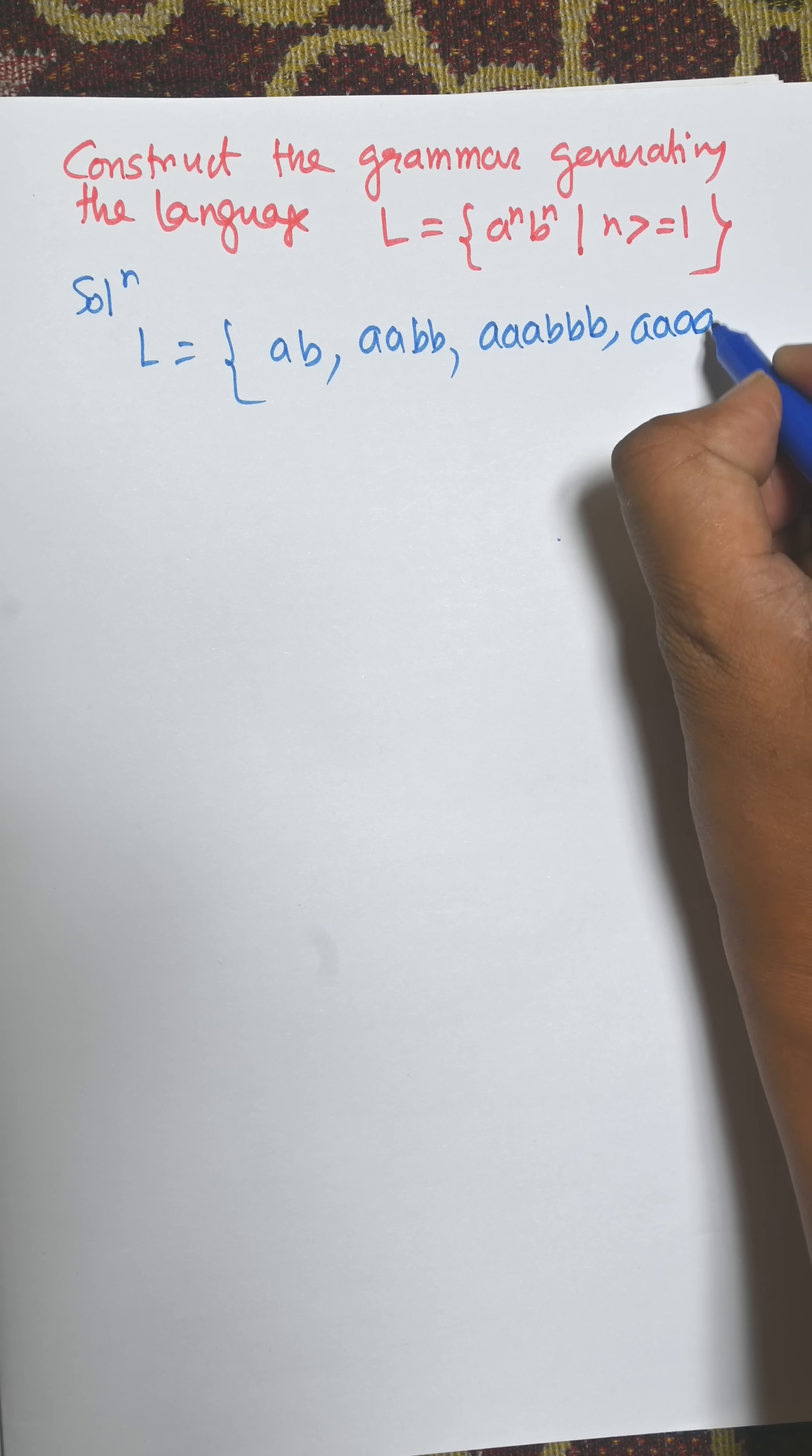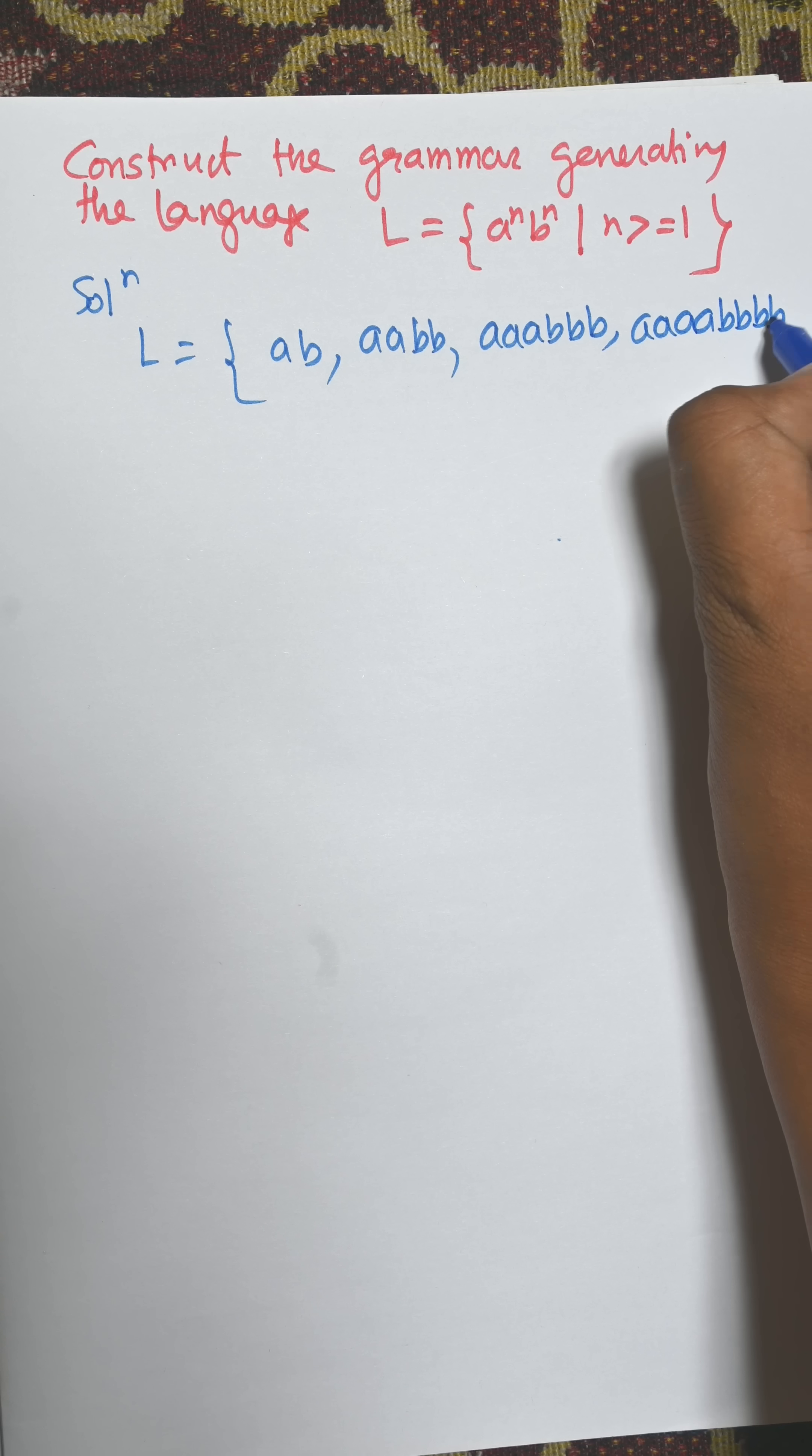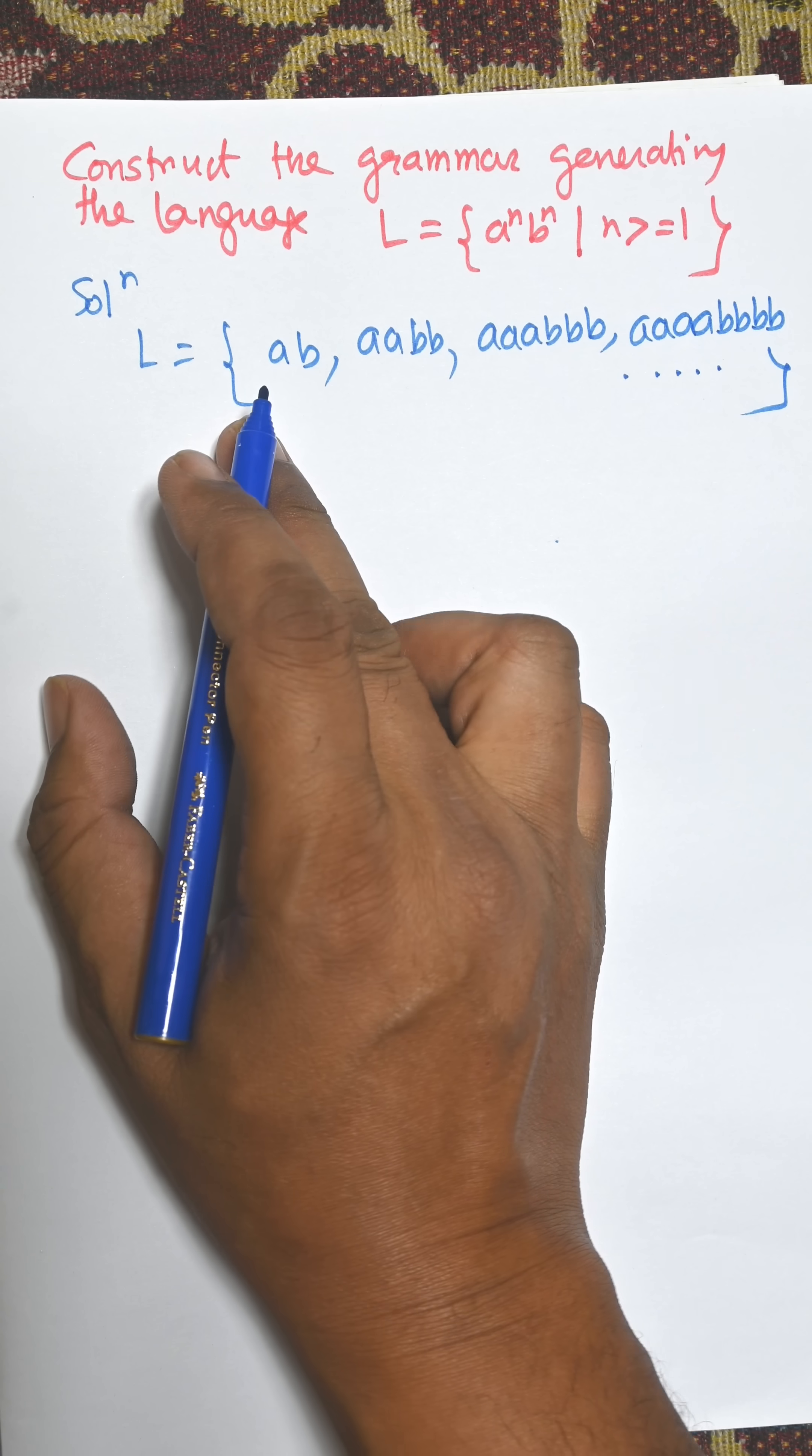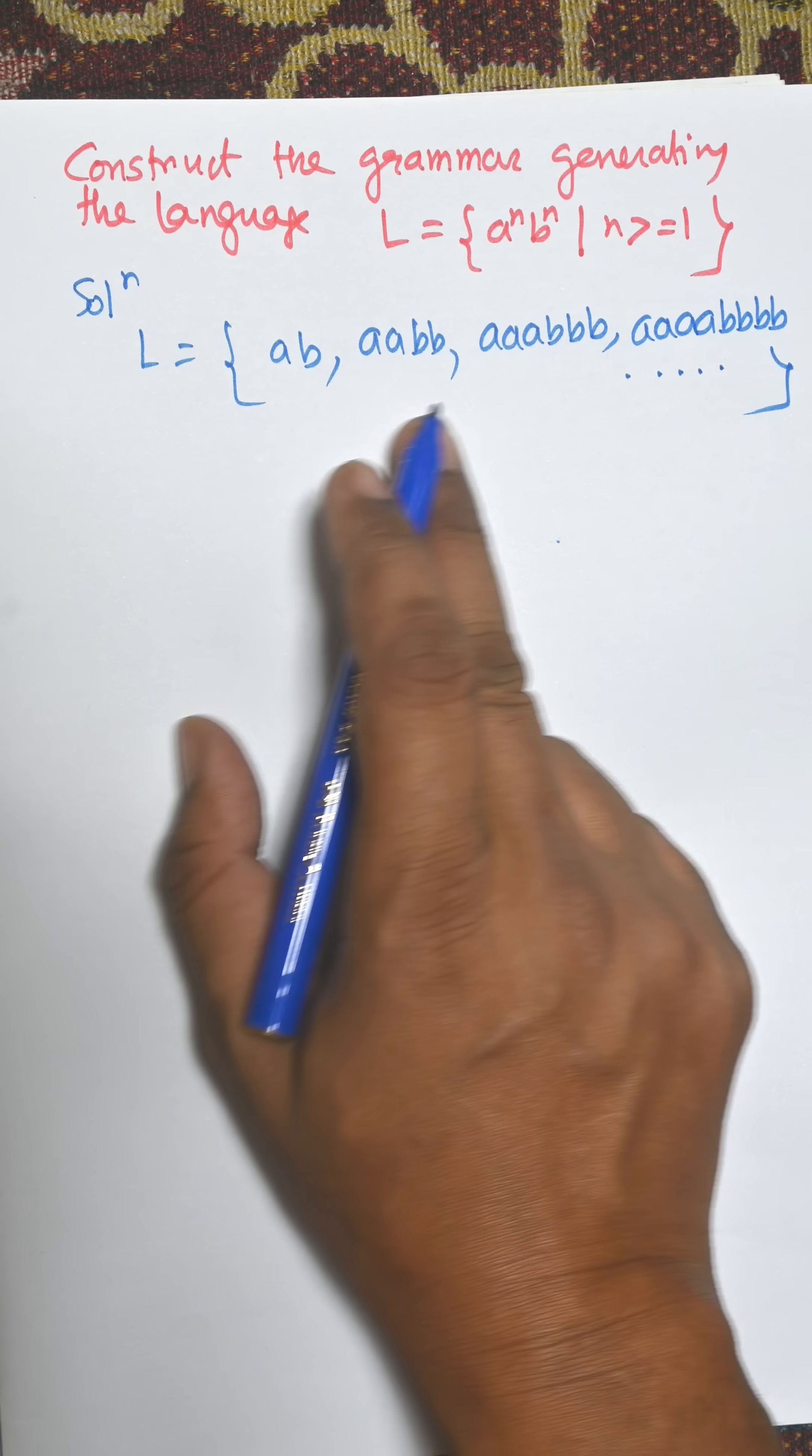For n equals 4, we have 4A and 4B. These are possible sets of strings. Now we need to construct the production rule for every string.